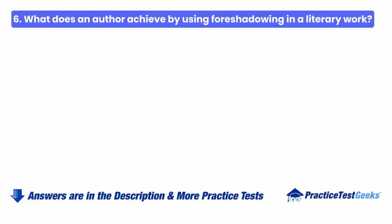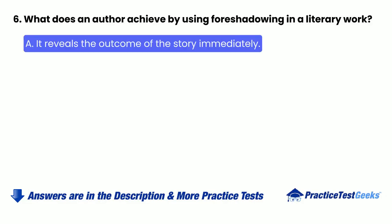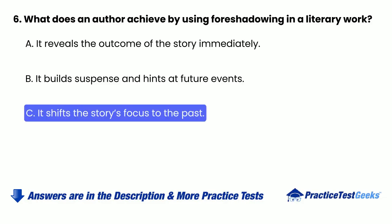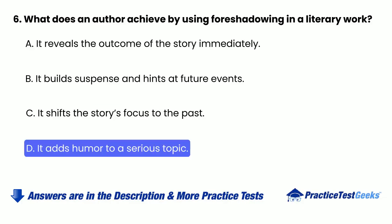6. What does an author achieve by using foreshadowing in a literary work? A. It reveals the outcome of the story immediately. B. It builds suspense and hints at future events. C. It shifts the story's focus to the past. D. It adds humor to a serious topic.